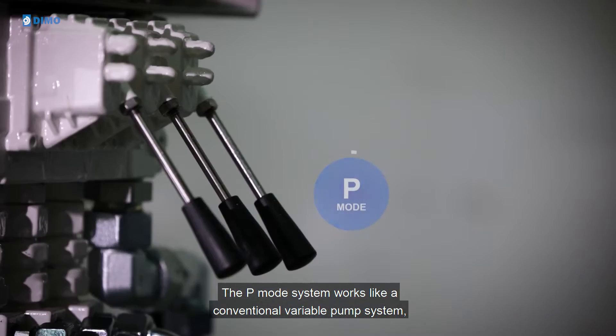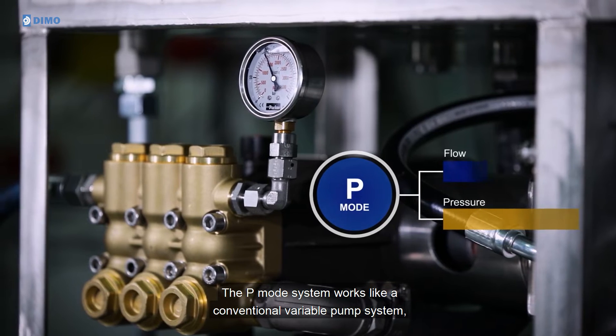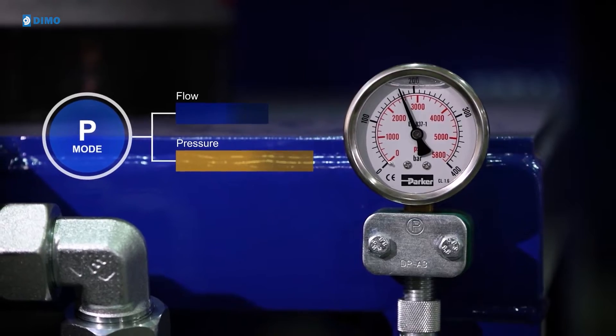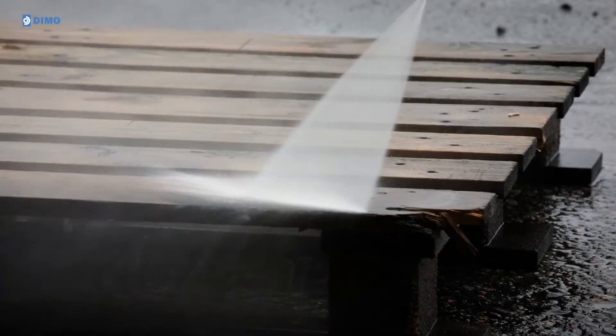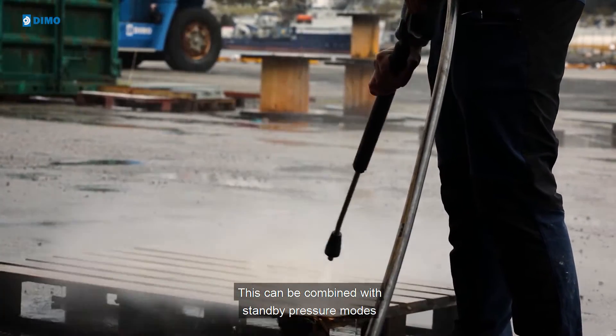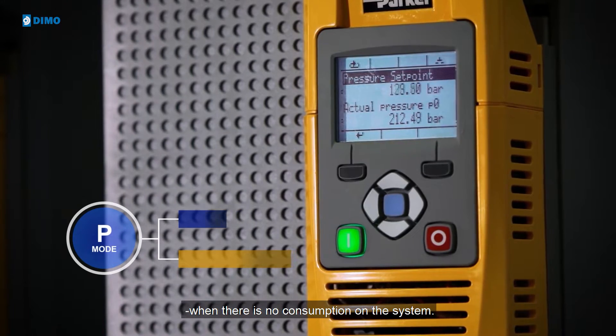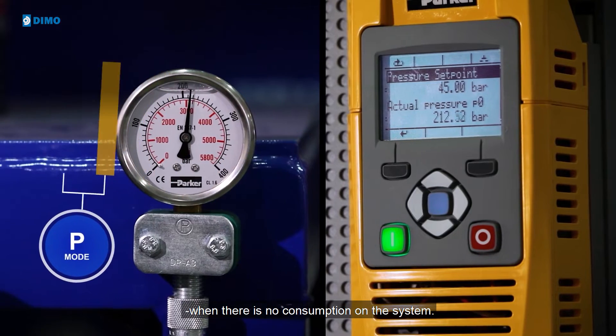The P-Mode system works like a conventional variable pump system, where constant system pressure is needed. This can be combined with standby pressure modes where the system pressure is reduced to a minimum when there is no consumption on the system.